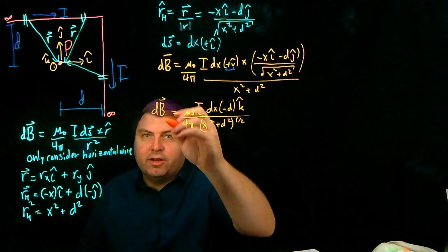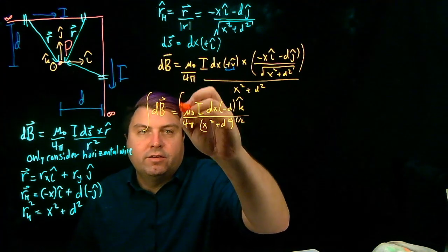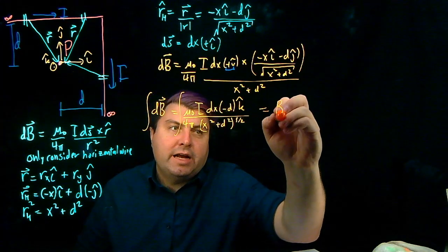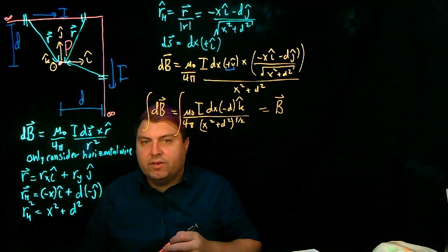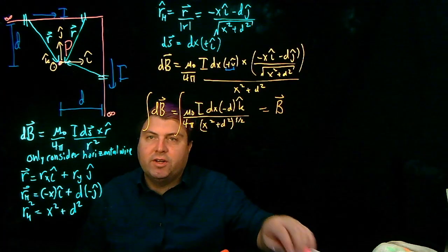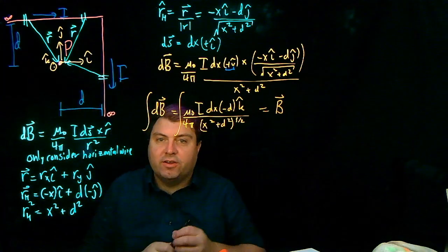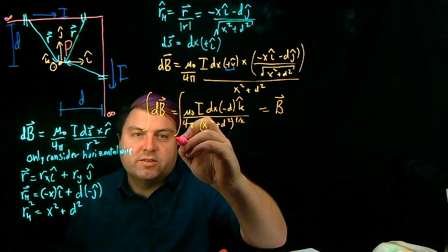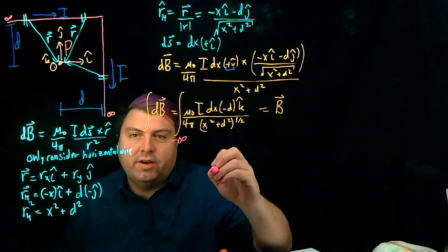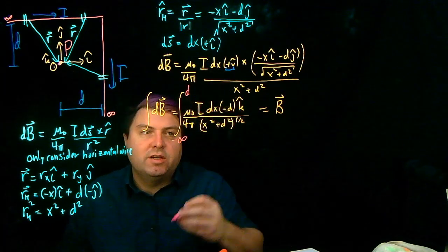But if we take the integral of this, then that will give us our magnetic field. So we just have to find the limits of integration for this. So the limits of integration is the smallest value of x and the largest value of x. Smallest value of x is going to be negative infinity. Largest value of x is going to be d.